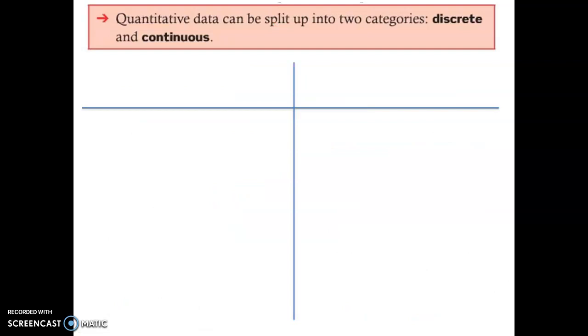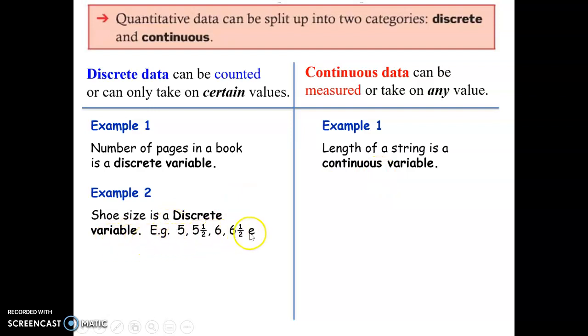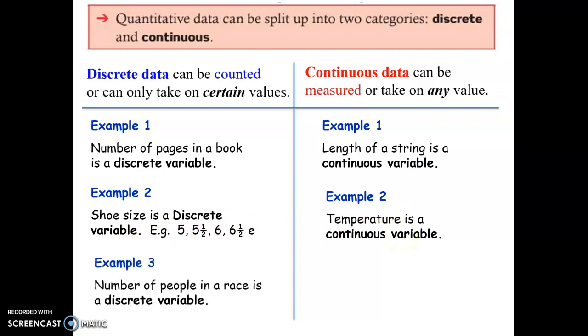Let's look at quantitative data and continuous a little bit more. Discrete data can be counted, and continuous can be measured. Example one for discrete: number of pages in a book. We can only say number of pages as a certain whole number or integer. That is discrete. Example: length of string. If you're measuring a string, the length of a string is a continuous variable. We can measure it to any degree of accuracy. Shoe size is discrete. Whereas temperature is continuous. We can measure to any degree of accuracy. Example three of discrete: number of people in a race. If you're counting how many people are racing, you can say 10 or 20 or 100 or 300 people. However, the time taken to run the race is a continuous variable because the time can be measured to any degree of accuracy.